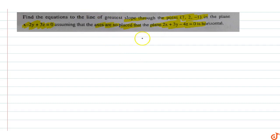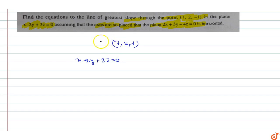We find the equations of the line which passes through the point (7, 2, -1) in the plane x minus 2y plus 3z equals zero, assuming that the plane 2x plus 3y minus 4z is horizontal. The vector along the line of intersection of the planes is needed.